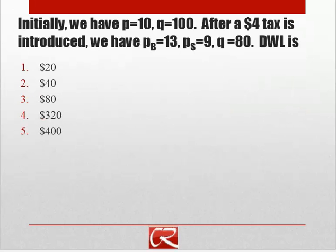Suppose the initial equilibrium in a market has price equals $10 and quantity equals 100. Then a $4 tax is introduced, and that $4 tax creates a $4 wedge between the price buyers pay (P sub B) and the price sellers get to keep (P sub S). It also reduces quantity transacted to 80.